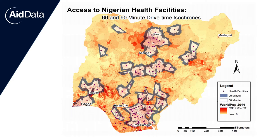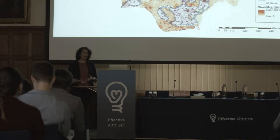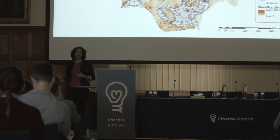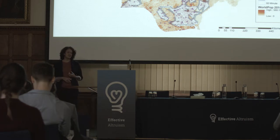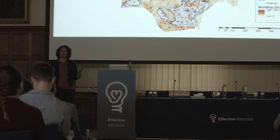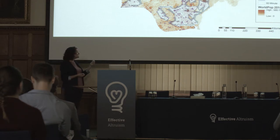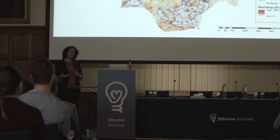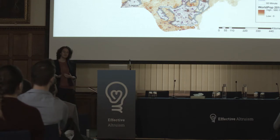More development organizations are incorporating geospatial targeting methods into their work. One example is PEPFAR — the President's Emergency Plan for AIDS Relief. PEPFAR's Nigeria team worked with AidData to assess whether they were allocating resources to effectively reach poor populations. We analyzed national poverty, population density, and road networks data to assess what percentage of Nigeria's poor population lived within reasonable reach of a PEPFAR-supported clinic. Now PEPFAR can use this data to identify populations they may be leaving behind and target future investments to maximize reach and development impact.